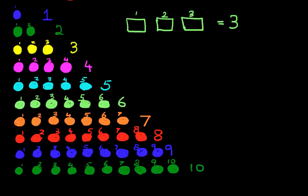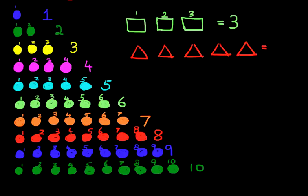Suppose the next one is: how many triangles? So how many triangles are there? This time I want you to count them. One, two, three, four, five. There are five triangles.